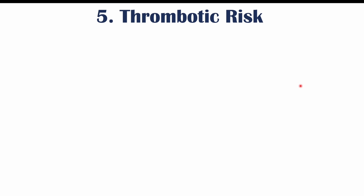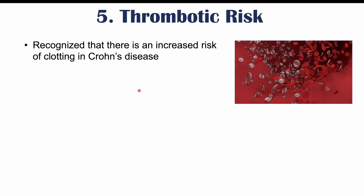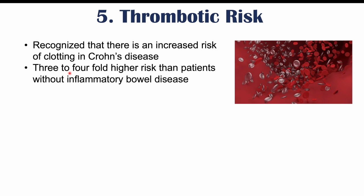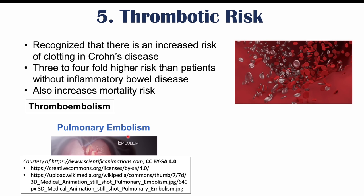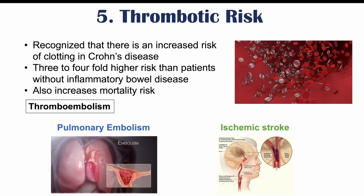Crohn's disease also carries a thrombotic risk. There is a recognized three- to four-fold higher risk of clotting or thrombosis in Crohn's disease patients compared to those without inflammatory bowel disease, which increases the risk of mortality. Patients can experience thromboembolisms such as pulmonary embolism, and if a clot reaches one of the cerebral arteries, it can lead to an ischemic stroke.